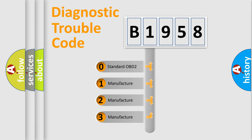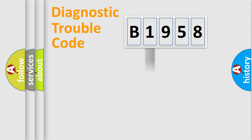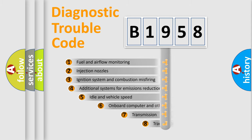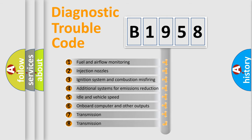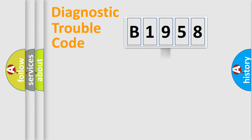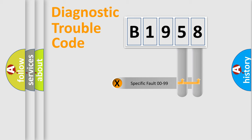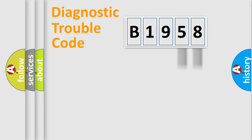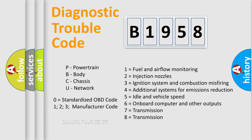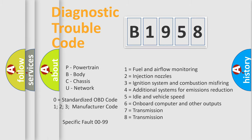If the second character is expressed as zero, it is a standardized error. In the case of numbers 1, 2, or 3, it is a manufacturer-specific error. The third character specifies a subset of errors. This distribution is valid only for the standardized DTC code, and only the last two characters define the specific fault of the group — valid only when the second character is zero.